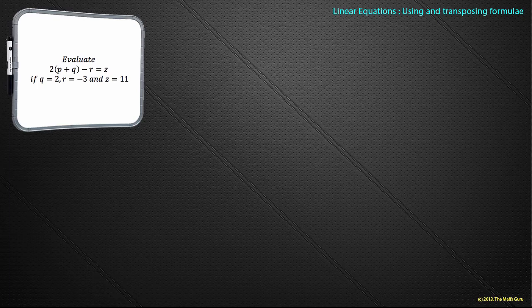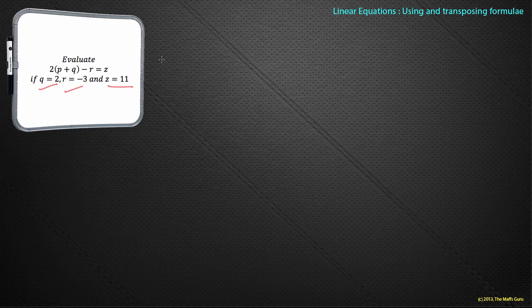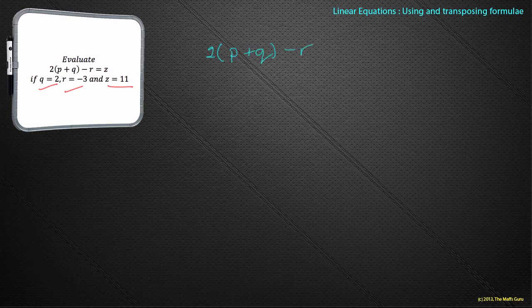First question. Evaluate: 2(p + q) - r = z, if q = 2, r = -3, and z = 11. With maths, the thing that tends to trip us up is the language. Here is obviously an equation, and q = 2, r = -3, and z = 11 - that's just a way of telling you to later on substitute. So the first thing I'm going to do is write out the equation: 2(p + q) - r = z.